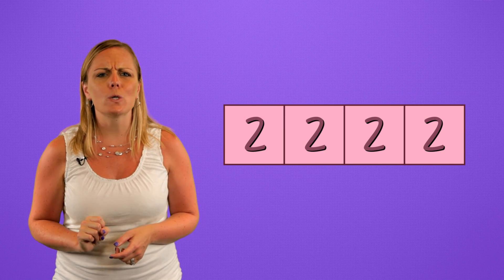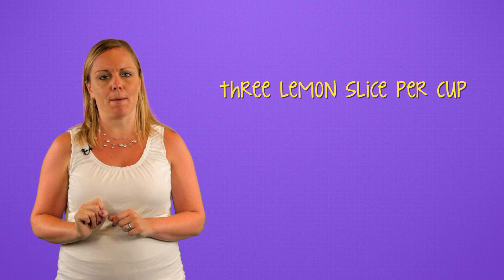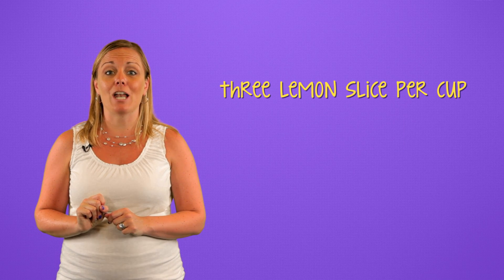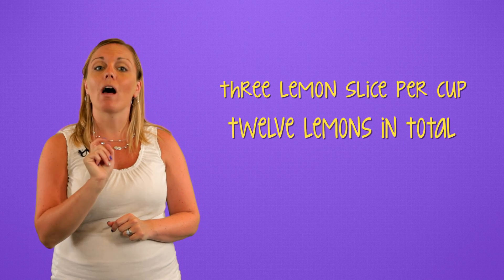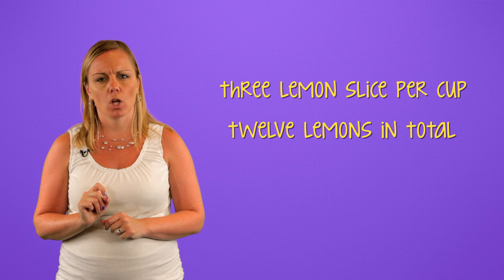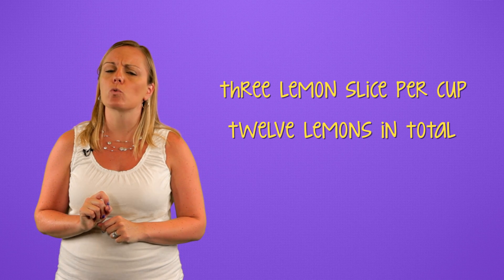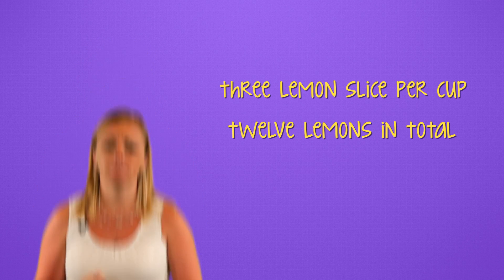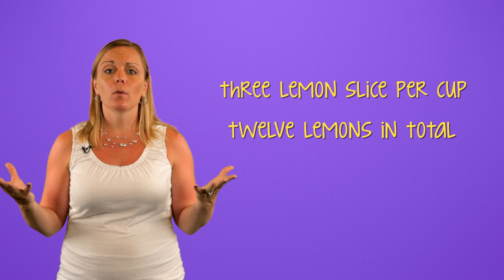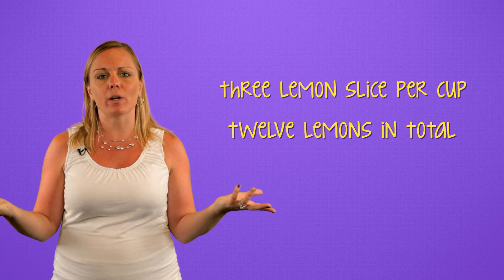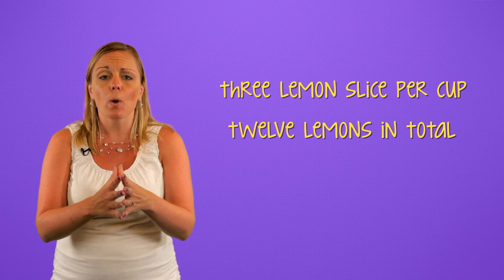Now, what if Rosie had used three lemon slices in each cup and used a total of twelve lemon slices? Which of these tape diagrams would represent that problem? Well, we know we want cups with three lemons in them, and there are twelve total lemons.